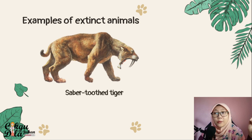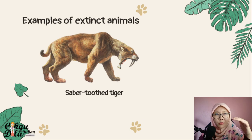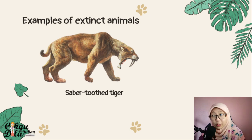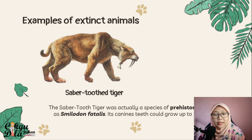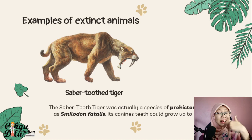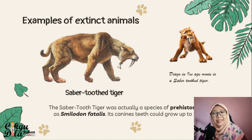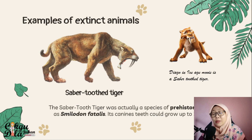We also have the Sabertooth Tiger. If you have seen the Ice Age movie, most of the animals in that movie are already extinct — like the Sabertooth Tiger, the mammoth. The Sabertooth Tiger is actually a species of prehistoric cat known as Smilodon fatalis. Its canine teeth could grow up to 30 centimeters long. Diego in the Ice Age movie is a Sabertooth Tiger.